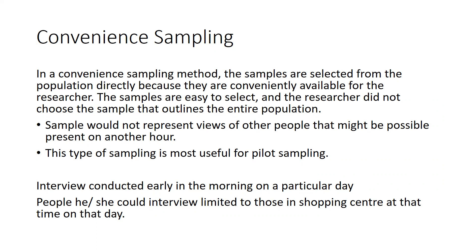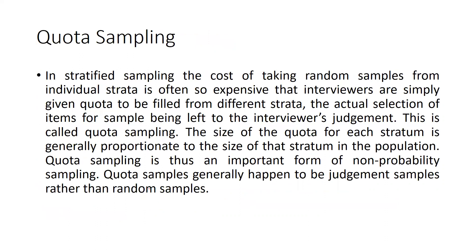In convenience sampling, the samples are easy to select, but the researcher does not choose a sample that represents the entire population, so results may not represent the views of others. This type of sampling is most useful in pilot studies — for example, an interview conducted early in the morning at a shopping center is limited to those present at that time.